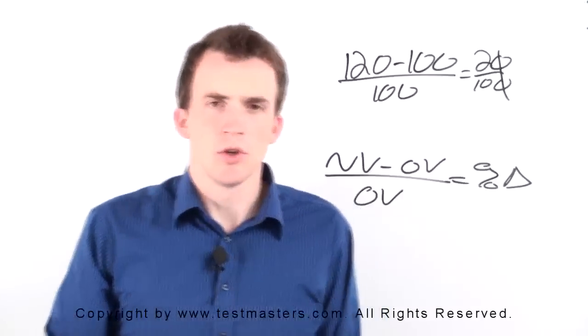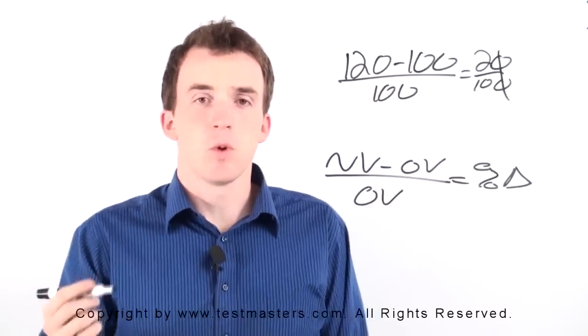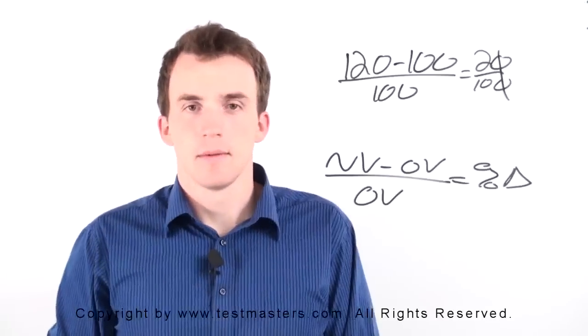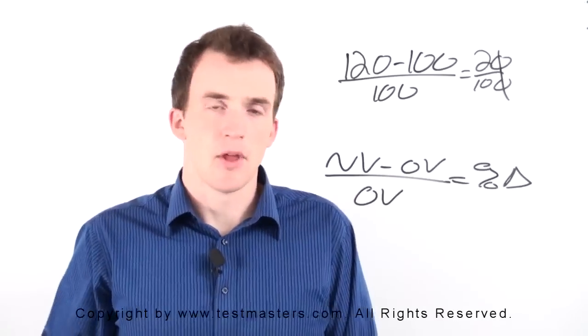So that's equal to 20 on the top and 100 on the bottom. We can cross out those zeros and we get 2 over 10, which is equal to 20%. So I made a 20% profit selling this pen to my buddy, hypothetically.